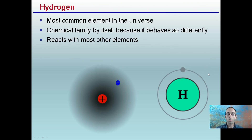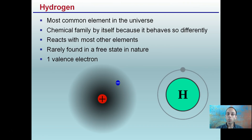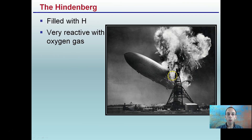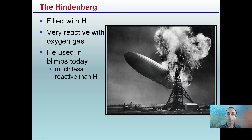Hydrogen is kind of on its own. It's the most common element in the universe and is a chemical family by itself because it behaves so differently. It reacts with most other elements and is rarely found in the free state in nature. It has one valence electron. The Hindenburg was filled with hydrogen — it's very reactive with oxygen gas. Helium, not hydrogen, is used in blimps today, as it's much less reactive than hydrogen to reduce the chance of explosion and fire.